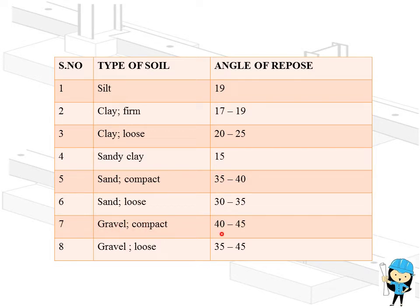For gravel compacted, it is 40 to 45. And for gravel loose soil, it is 35 to 45. So from this table, we will be deciding the value of theta by knowing the type of the soil.